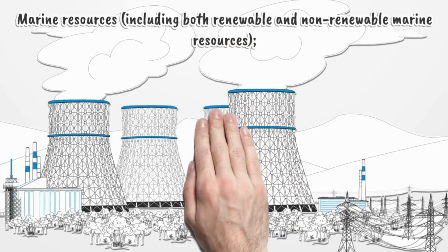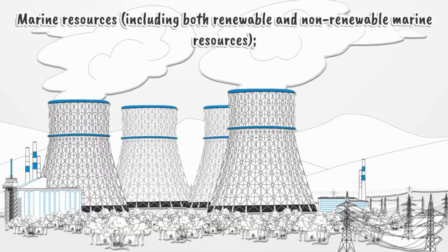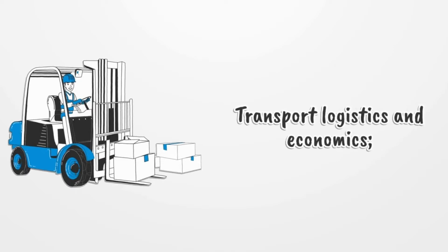Number 4: Marine resources, including both renewable and non-renewable natural resources. Natural resources are materials or things that people use from the earth. There are two types: renewable natural resources, which can grow again or never run out, and non-renewable natural resources, which can run out or be used up and usually come from the ground.